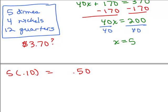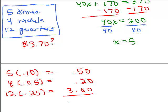So 5 dimes would be 5 times 10 cents or 50 cents for the dimes. I've got 4 nickels. Each nickel's worth 5 cents. So that would be 20 cents. And I have 12 quarters. So that's 12 times 25, which is $3.00. And we just add it all up and I get 3.70. So yeah, that checks out, doesn't it?